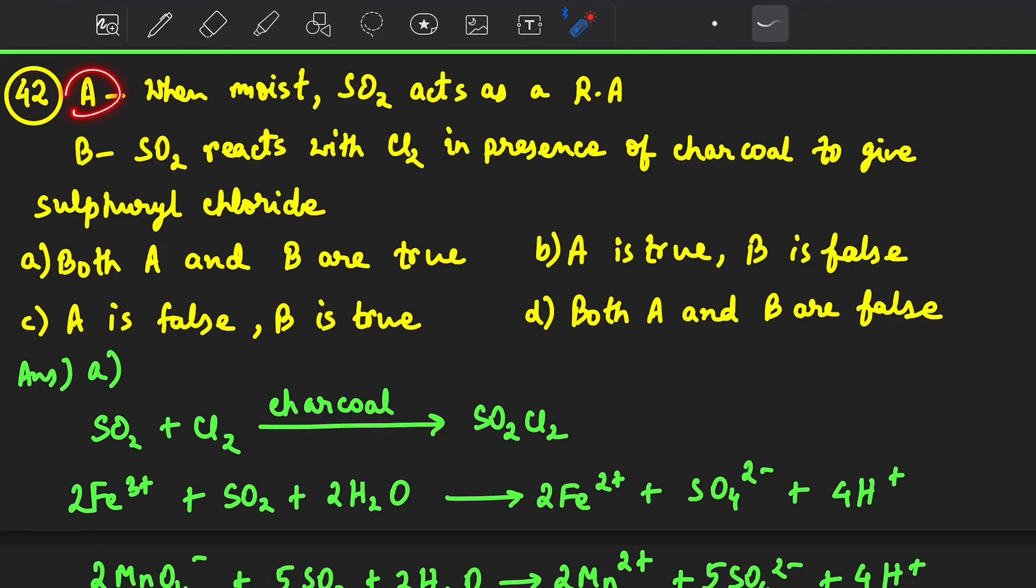Hello friends, welcome. Our next MCQ is when moist sulfur dioxide acts as a reducing agent, that is it will reduce others and it will itself get oxidized to plus 6 oxidation state.